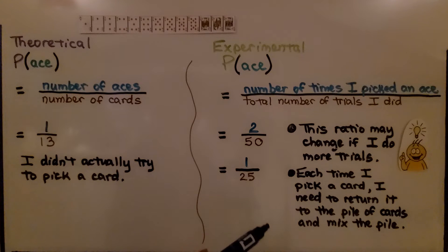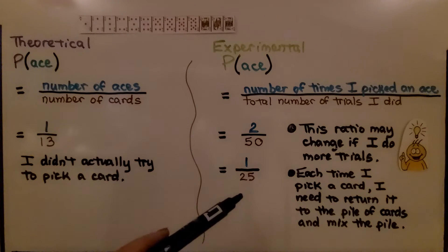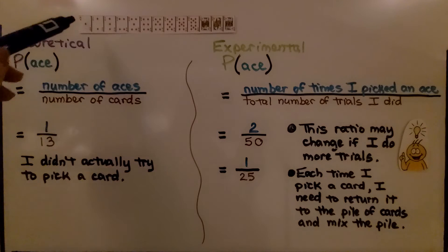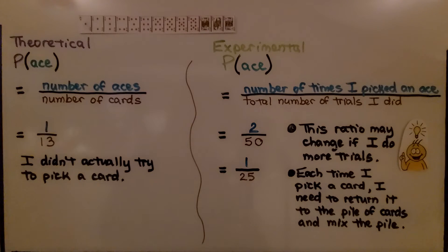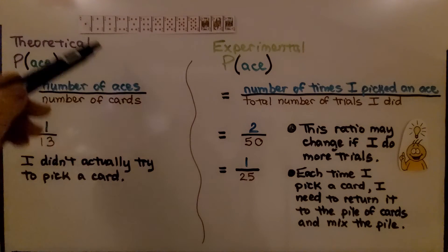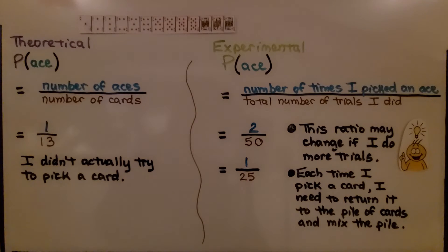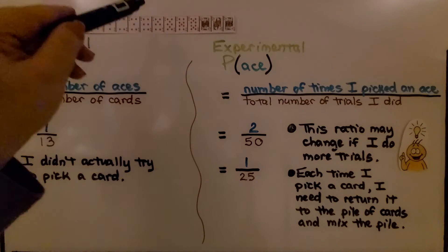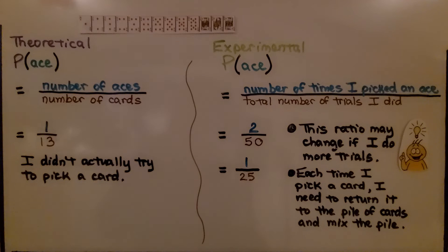Each time I pick a card, I need to return it to the pile and shuffle it again so I have a chance of picking the ace again. I can't pick the ace and leave it out, because then there are only twelve cards and no ace. So every time I pick a card, I put the card back, shuffle it up, and then try picking again.